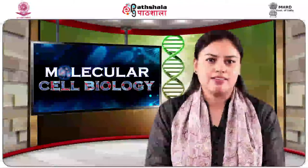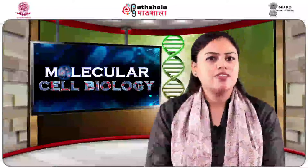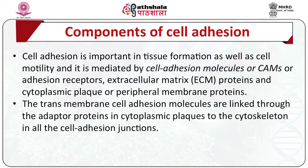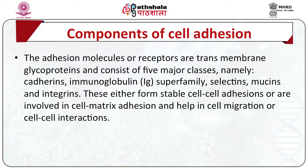Next we look at the components of cell adhesion. Cell adhesion is important in tissue formation as well as cell motility and is mediated by cell adhesion molecules or CAMs, extracellular matrix proteins, and the cytoplasmic plaque or peripheral membrane proteins. The transmembrane cell adhesion molecules are linked through adapter proteins in cytoplasmic plaques to the cytoskeleton in all cell-cell adhesion junctions. The adhesion molecules or receptors are transmembrane glycoproteins and consist of five major classes: the cadherins, immunoglobulin superfamily, selectins, mucins and integrins. These either form stable cell-cell adhesions or are involved in cell-matrix adhesion and help in cell migration or cell-to-cell interaction.